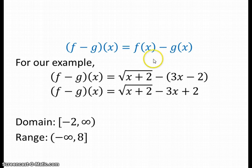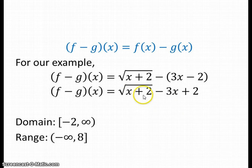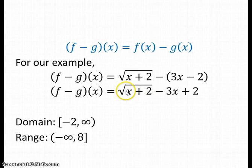Our subtraction of functions gives something fairly similar. We put g of x in parentheses so that when we subtract it, we change the sign of both terms. This still gives us the same domain because we still have x plus 2 inside the square root, so we need values that make it zero or positive. The domain is again negative two to infinity.